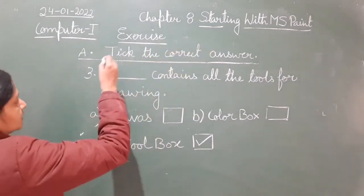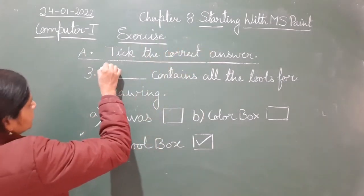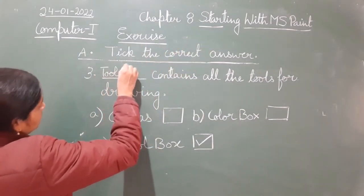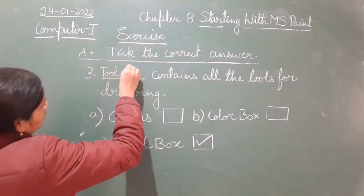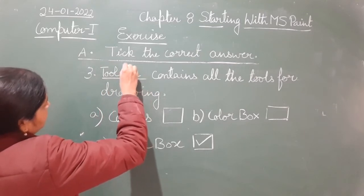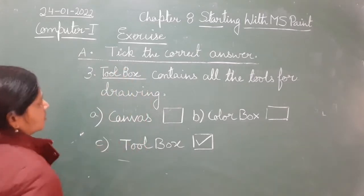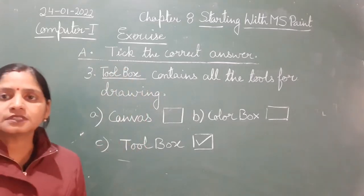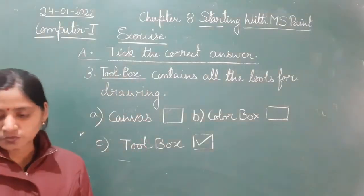Color box means the box which has all the colors we use for coloring objects drawn in MS Paint. Tool box means the box which contains all the tools we use while making drawings. So here the answer is tool box, and you will write tool box.